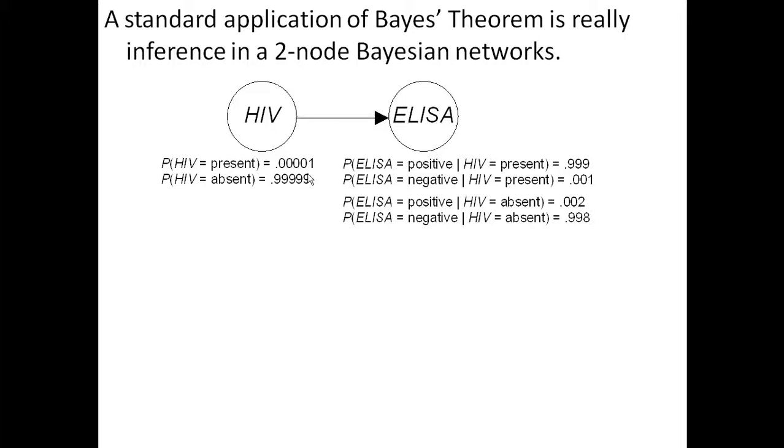Remember, these are the same numbers we saw before. The probability HIV equals present is .00001.